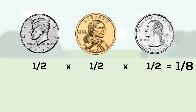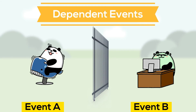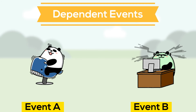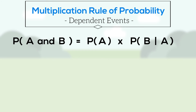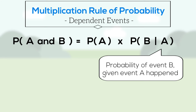What if the events are dependent? What if the second event's probability is based on the outcome of the first event? In this case, the probability of the events happening together is a little more complicated: the probability of event A happening, multiplied by the probability of event B happening given that event A happened.